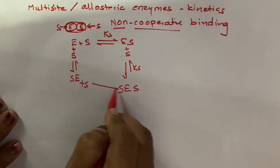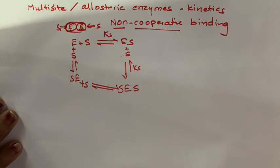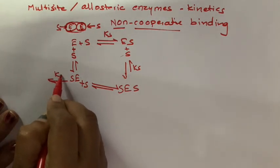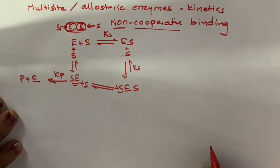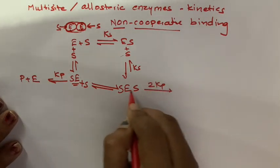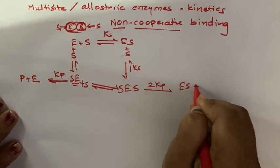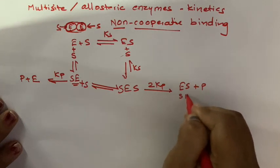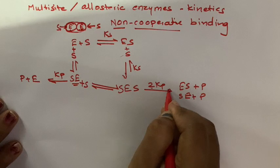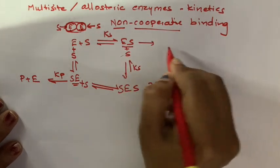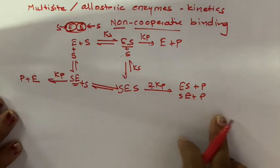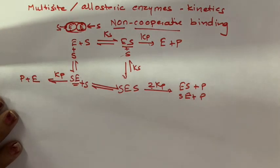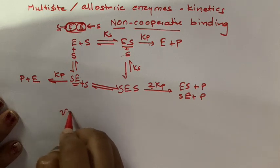So Es plus S will also have Ks as dissociation constant, giving us S-Es. Se plus S will also give S-Es. Se can form product plus enzyme. S-Es can also form product — since two substrates are bound, it can give Es plus P or Se plus P with rate constant 2Kp. Es can also give rise to product with rate constant Kp, giving E plus P. This is the enzyme equation for Non-Cooperative sites of allosteric enzymes.